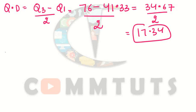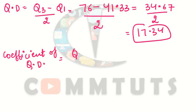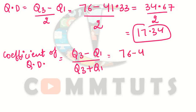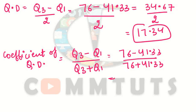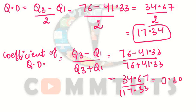Next, we calculate the Coefficient of Quartile Deviation. The formula is: (Q3 − Q1) / (Q3 + Q1) = (76 − 41.33) / (76 + 41.33) = 34.67 / 117.33 = 0.30. So the coefficient of quartile deviation is 0.30.